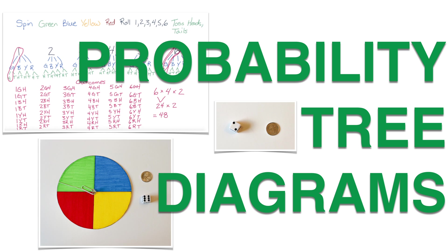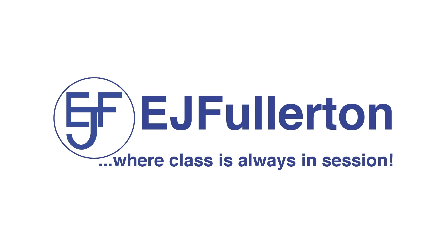Hi, I'm Eric. In this lesson, we are going to learn how to list all the possible outcomes of a probability event by drawing a tree diagram.